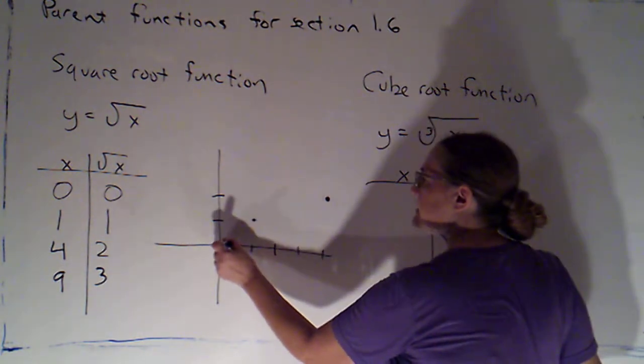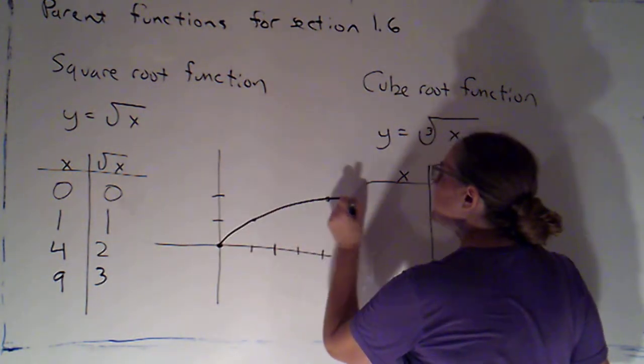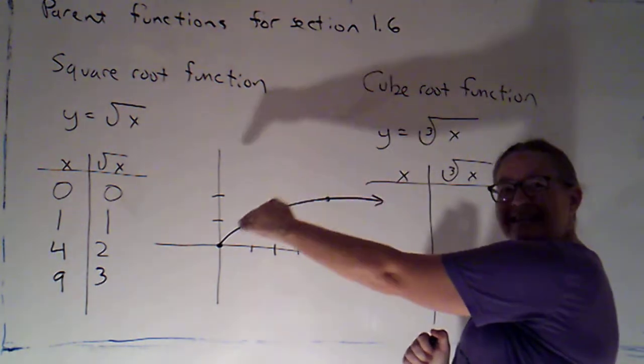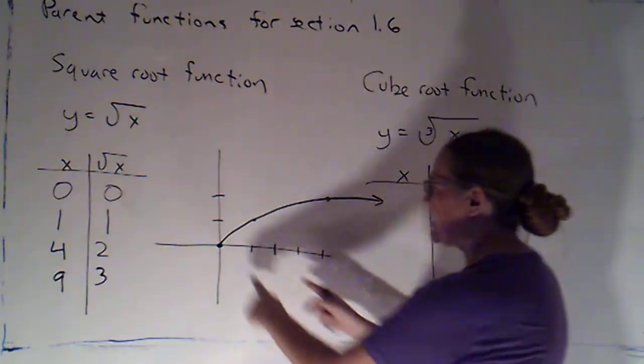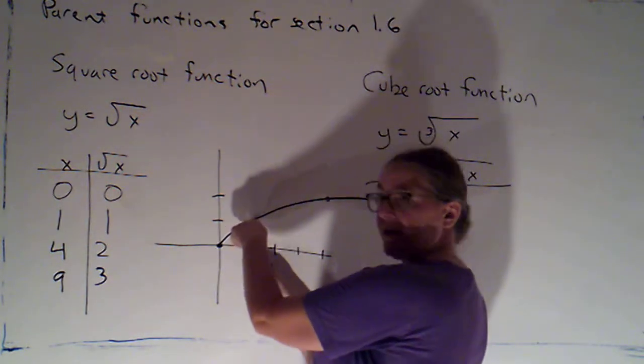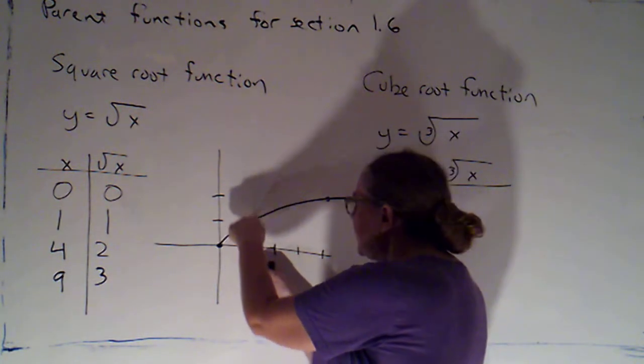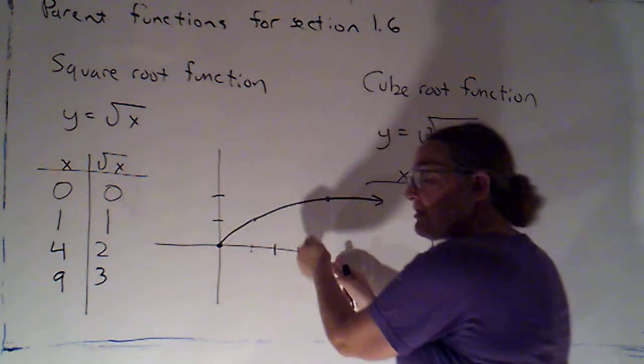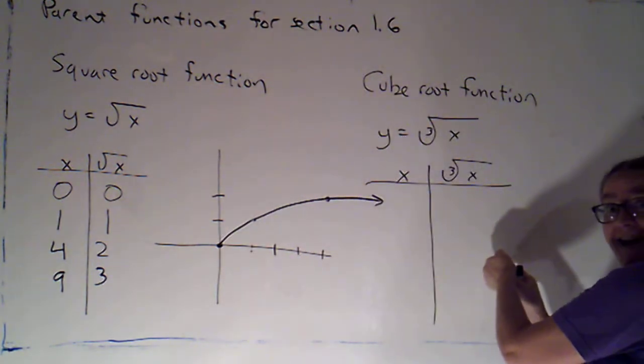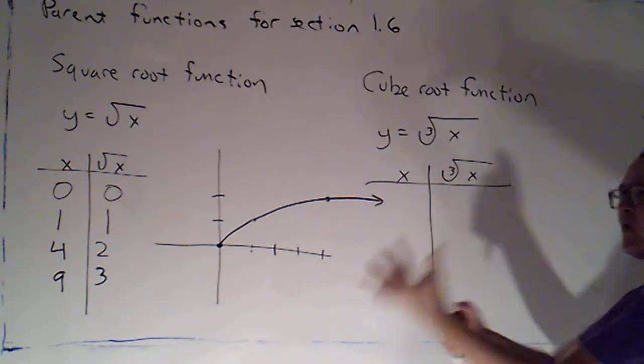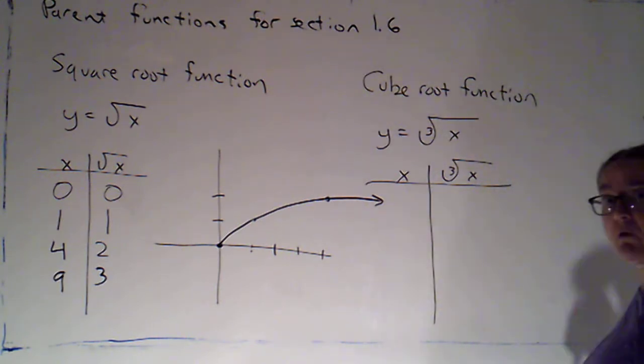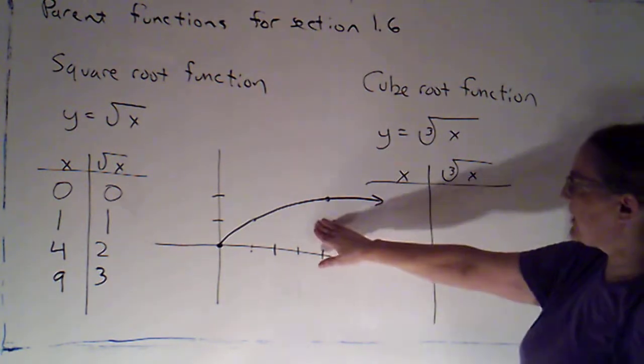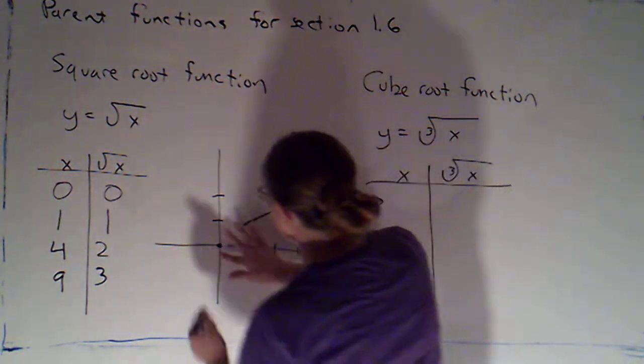But I can see if I connect the dots, I've got something that's going up and to the right, but it's getting less steep as we go. Because when I went over 1 here, we went up just 1. We didn't go up to 2 until we got all the way over to 4. We're not going to be at 3 until we're all the way over at 9.